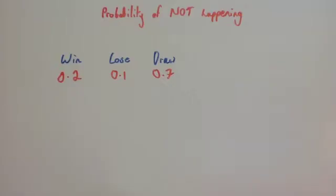In this video, we're going to look at the probability of an event not happening. If for instance I was to look at the chance of a team winning, losing or drawing a football match, the probabilities could be 0.2, 0.1 and 0.7.